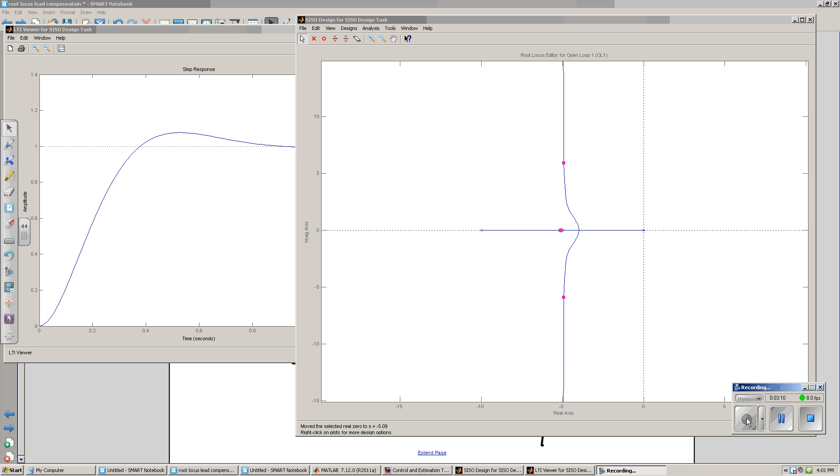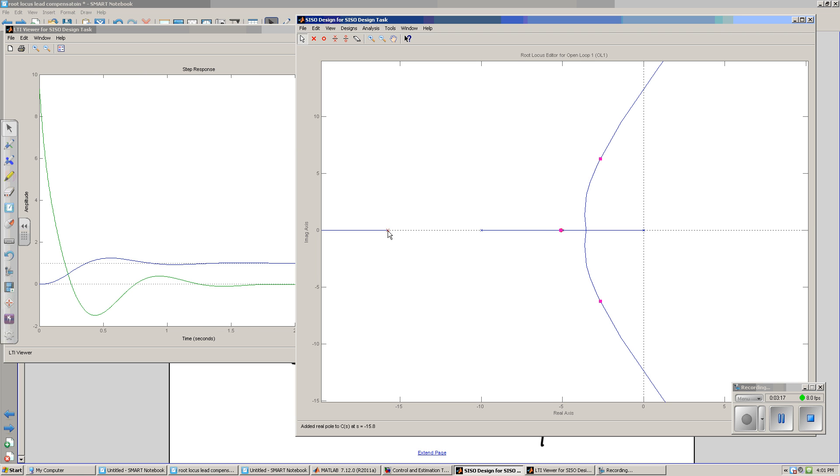You can see that on the root locus plot, I've added a zero at minus 5. I'll now add a pole at minus 15, giving you that root locus plot. I could then adjust the gain to get your desired overshoot. And you're done with your design.